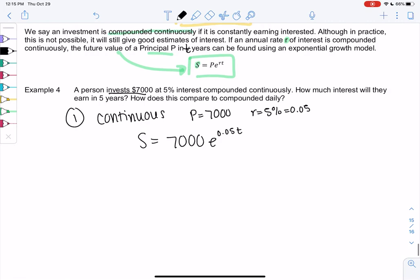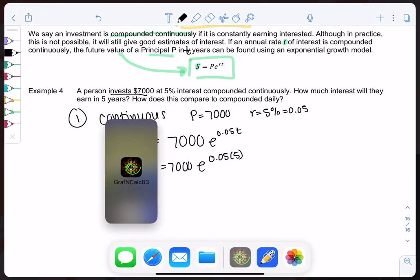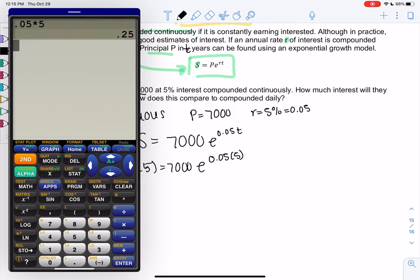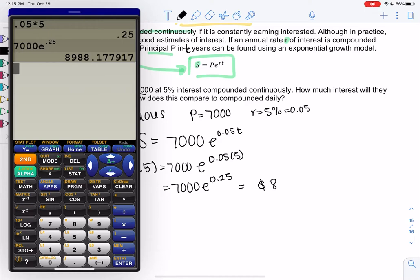And so then if we want to find out how much they have in five years, we just plug in 5. So 7,000 E to the 0.05 times 5. So I type everything at once if I can, but otherwise, if not, do the power first. So 0.05 times 5 gives me 7,000 E to the 0.25. So 7,000 E to the 0.25. Since it's money, I'll do two decimal places, 8,988.18. That's how much is in the account.